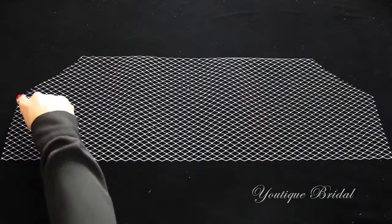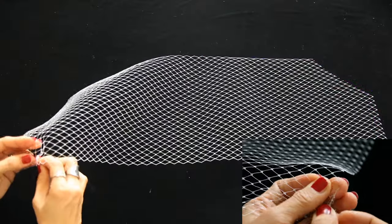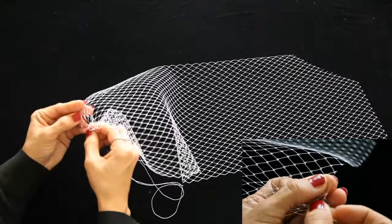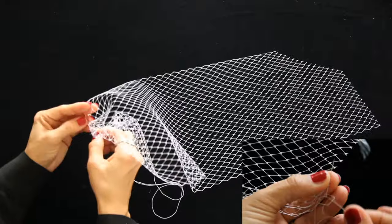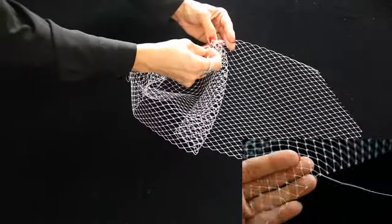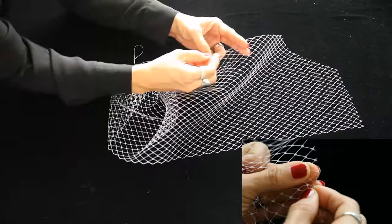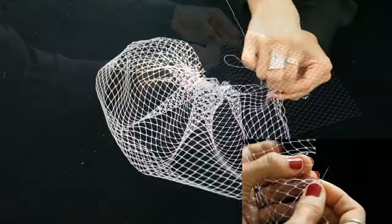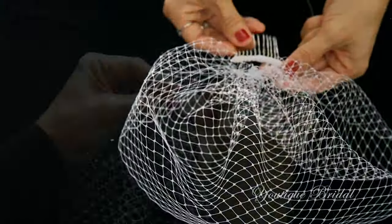Now you're going to start sewing all the way around the Russian tulle by weaving in and out of the diamond holes. And when you get to the very end, make sure the width matches the hair comb.